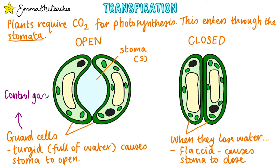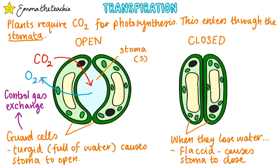The guard cells control gas exchange. When the stomata are open, carbon dioxide diffuses into the leaf where it's then used for photosynthesis. Oxygen is produced in this process and diffuses out of the leaf — at least the excess that isn't needed for respiration. Unfortunately, water vapor is also able to escape through these open pores.